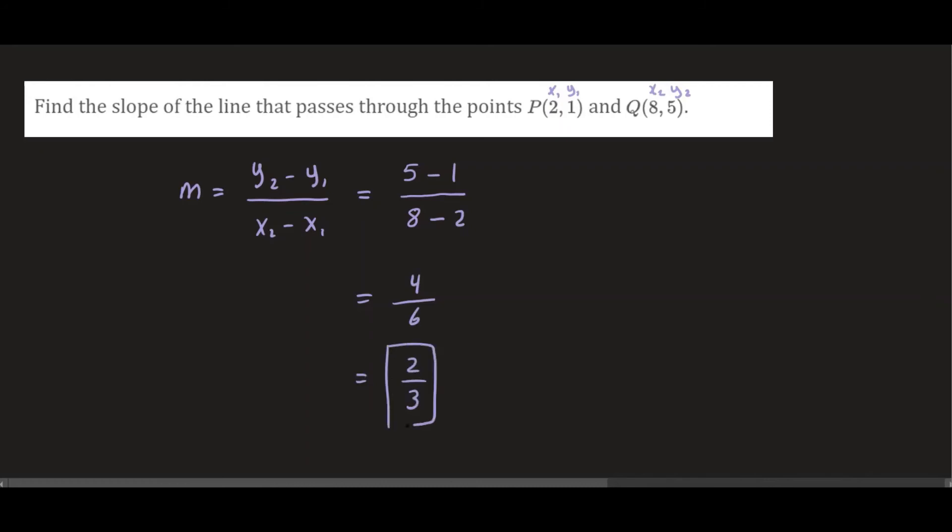So there you have it, you have your slope. So this is a positive slope. Which means if you were to graph the line that connects P and Q, it will look something like that. So you'll have your points P and Q connecting through them using a positive slope.